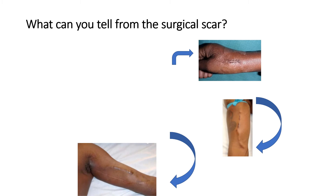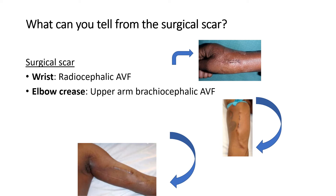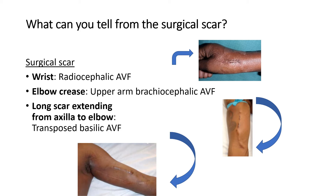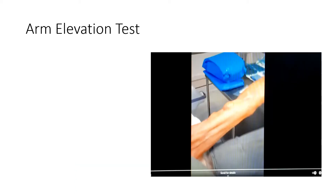Note the surgical scar, which tells you what kind of fistula is present. A wrist scar indicates a radiocephalic fistula; a scar in the elbow crease indicates an upper arm brachial basilic AV fistula; and a long scar extending from the armpit to the elbow indicates a transposed basilic AV fistula.